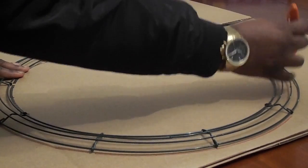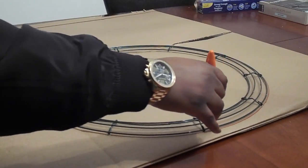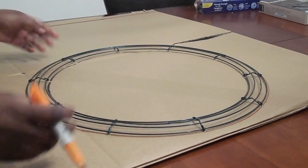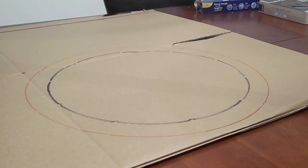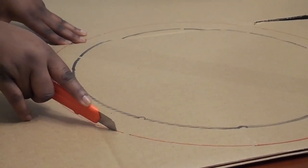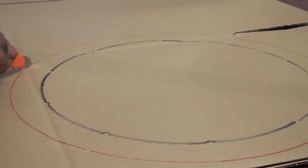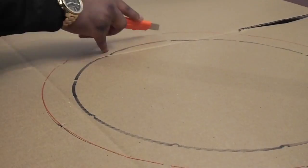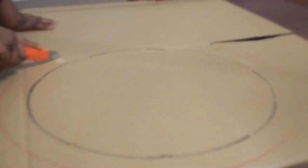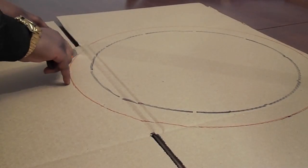Alright, so what you're doing here is you're going to trace the outside of the wire wreath just to get an outline. You're going to trace the inside as well. And then after that, you're going to take your box cutter and cut the shape out. I usually start from the outside and then go inside.